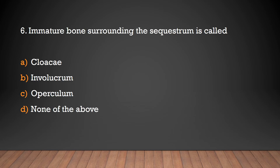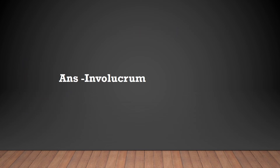Immature bone surrounding the sequestrum is called: cloaca, involucrum, operculum, or none of the above. The answer is involucrum — immature bone surrounding the sequestrum is called involucrum.